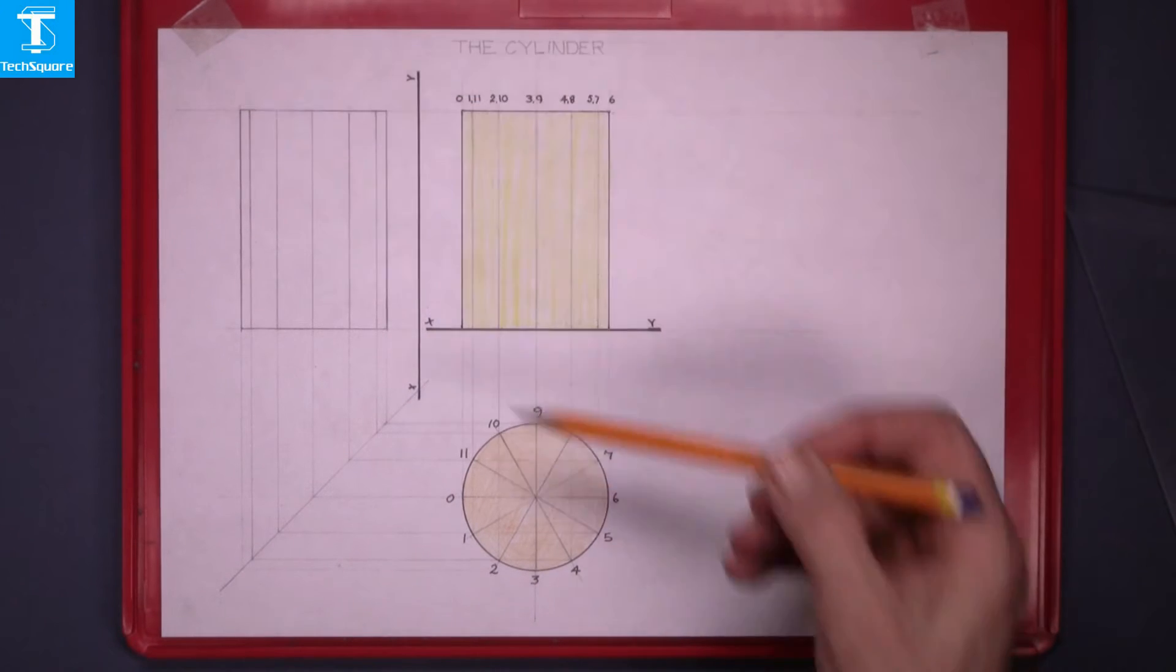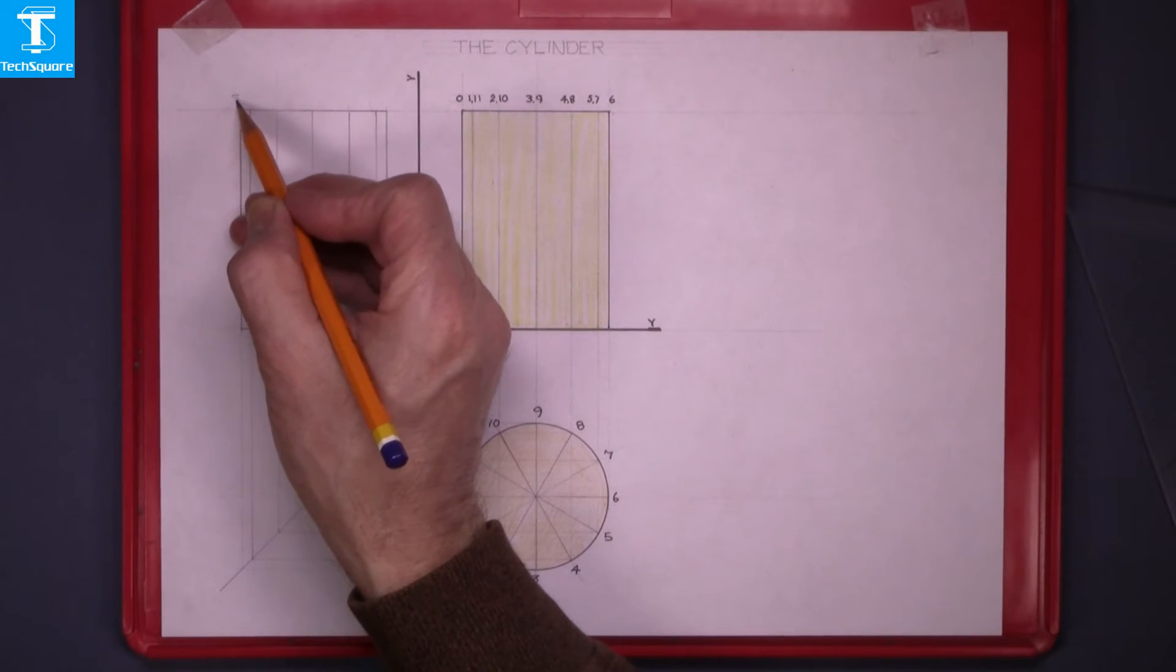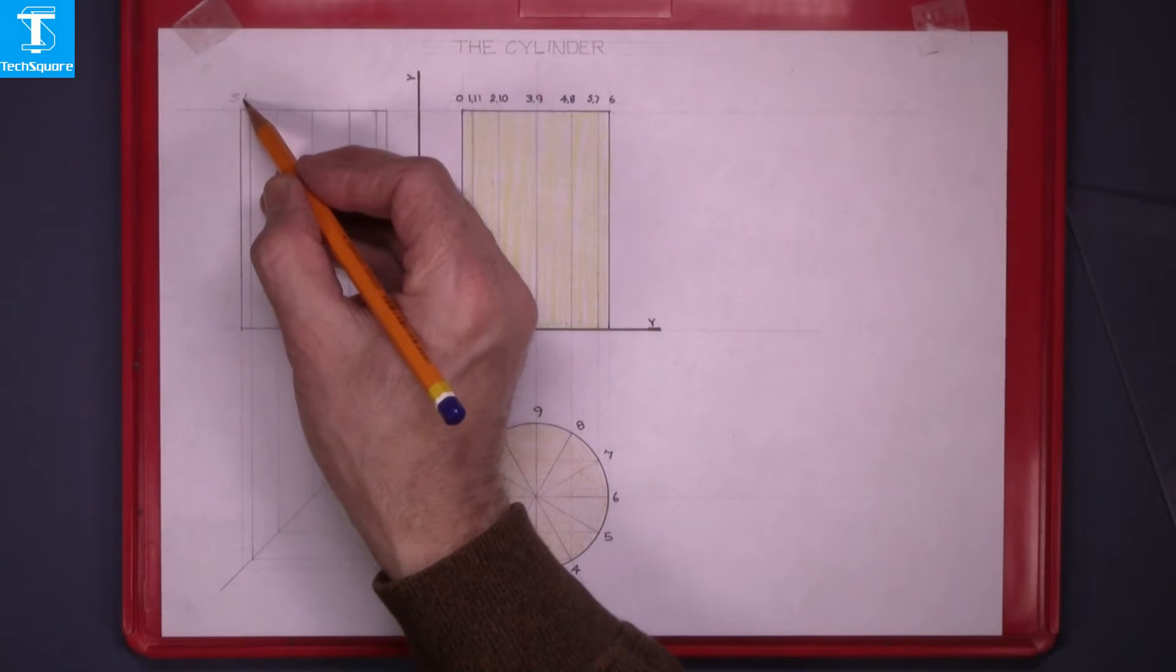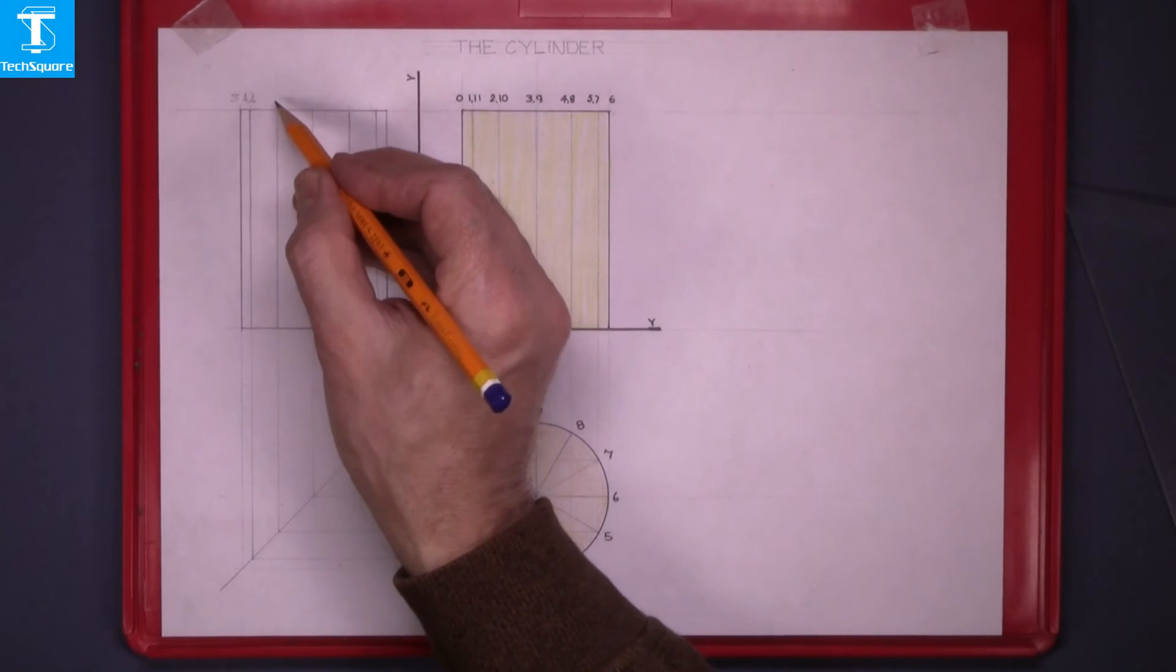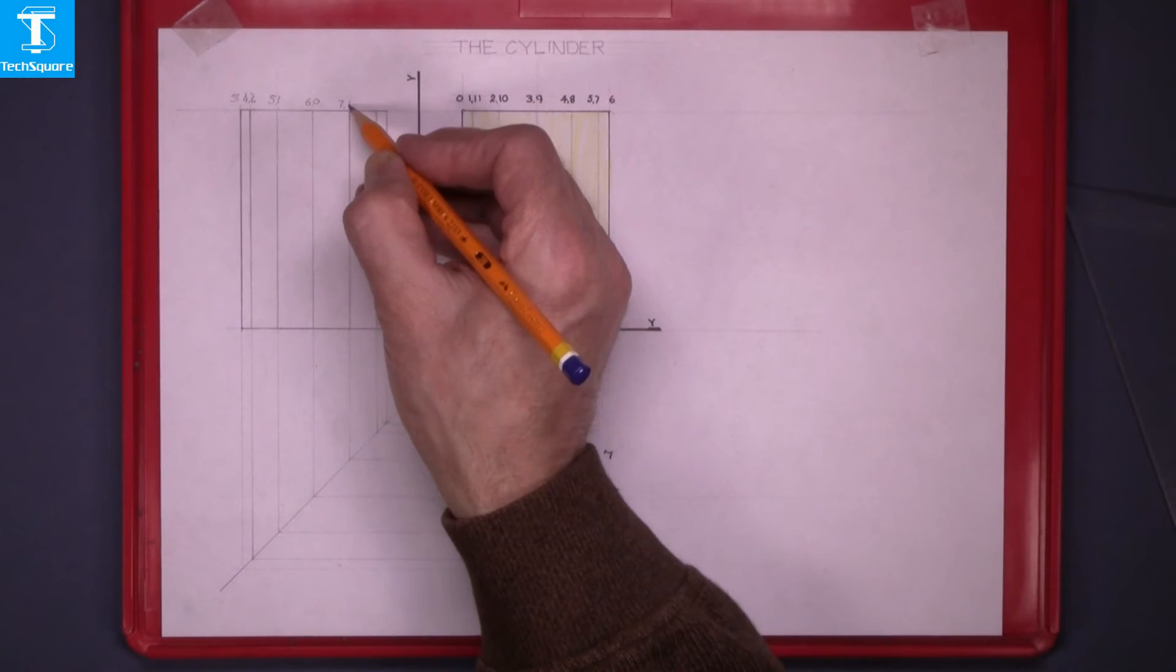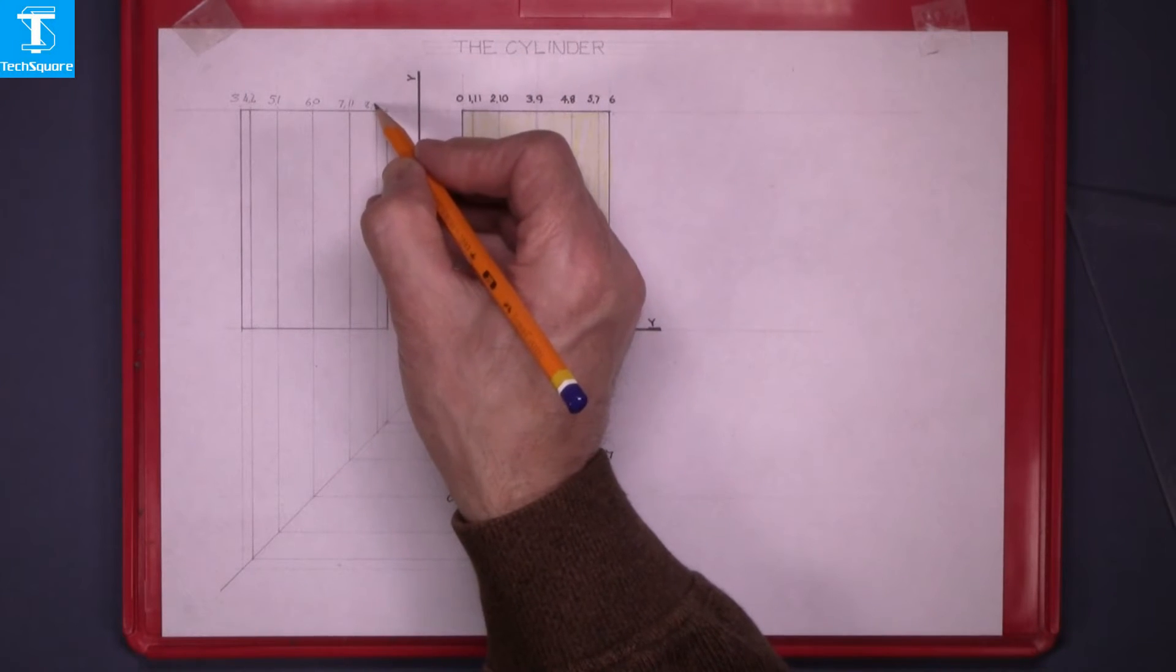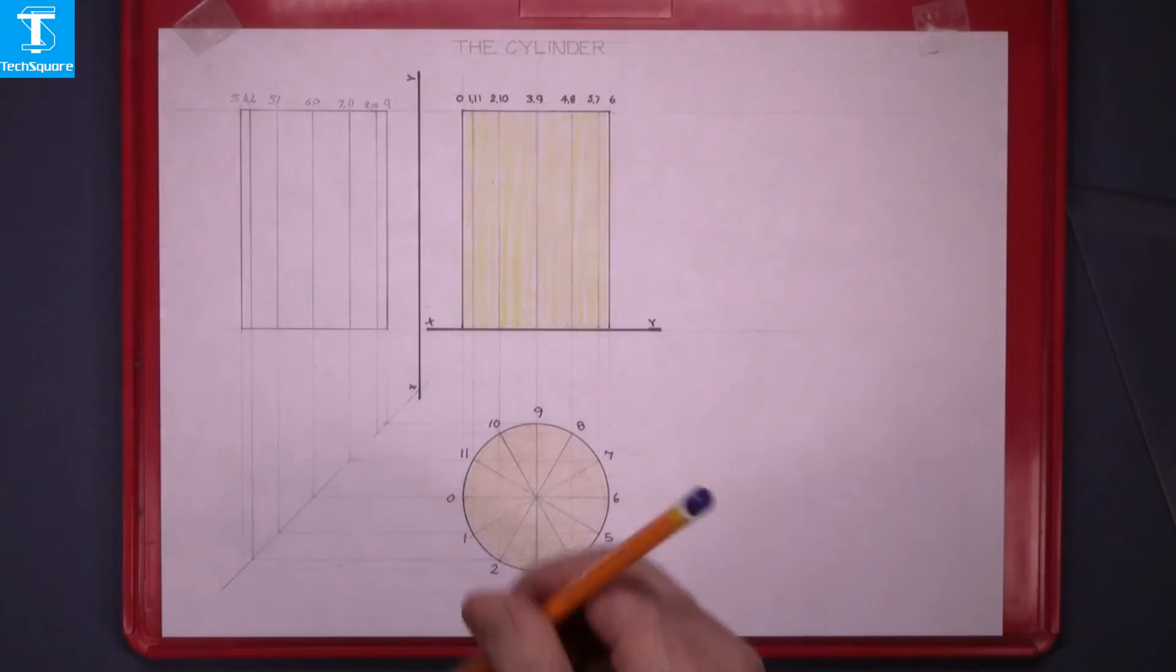Now to index the points. 3 brought across here to the top means 3 is the first point there. The next point is 4, 2. The next point is 5, 1. So 5, 1 at the top. 6 and 0, 6 and 0, 7, 11, 8, 8, 10 and the last point is 0, 9. And that's the end view now complete.